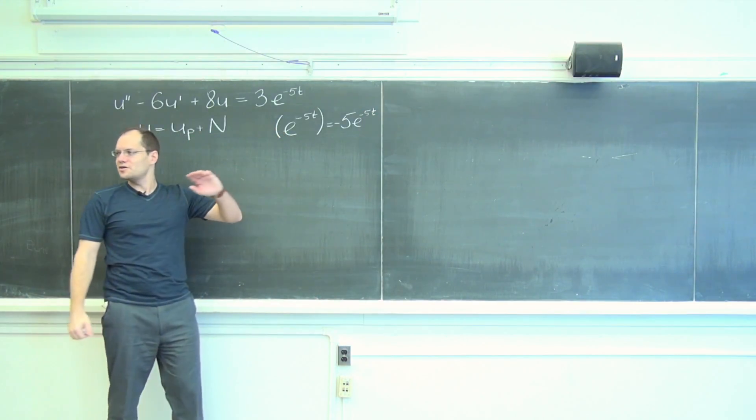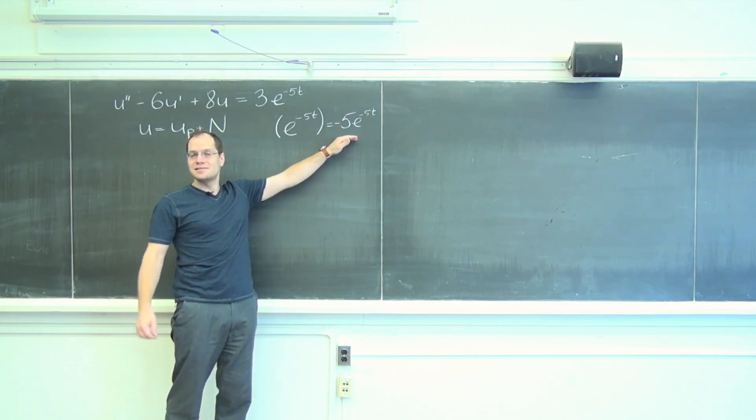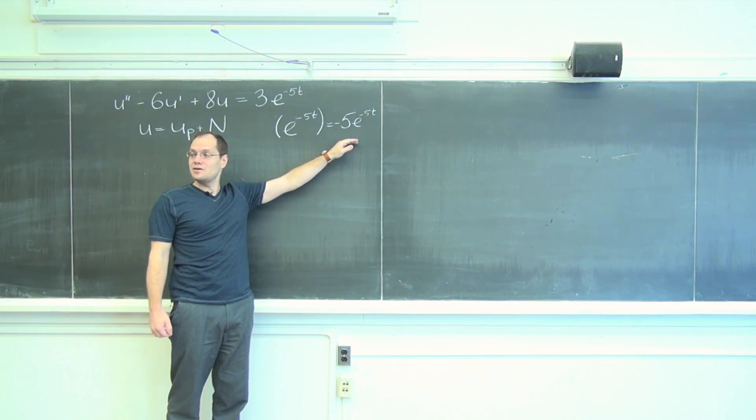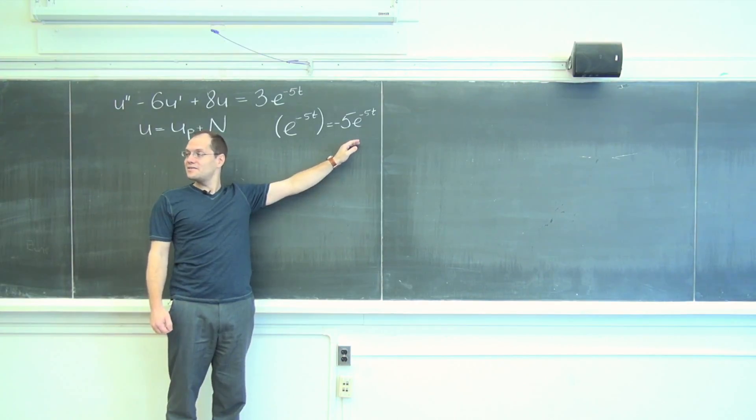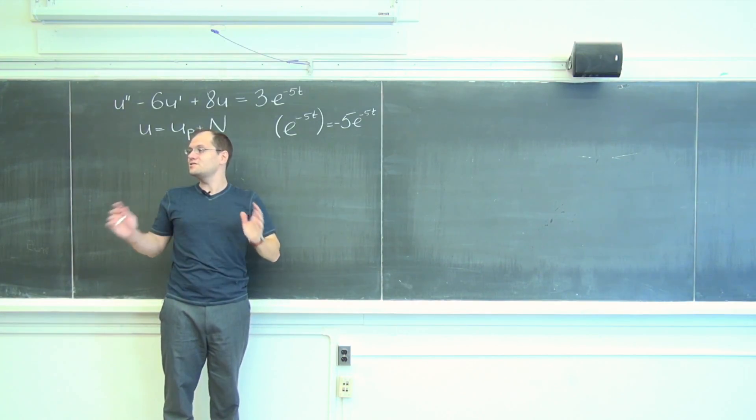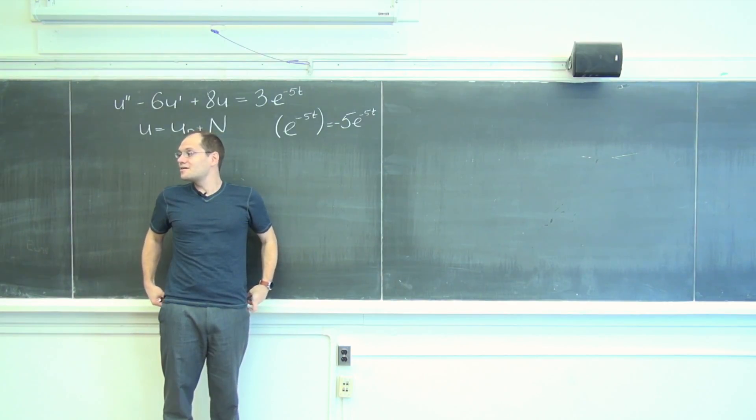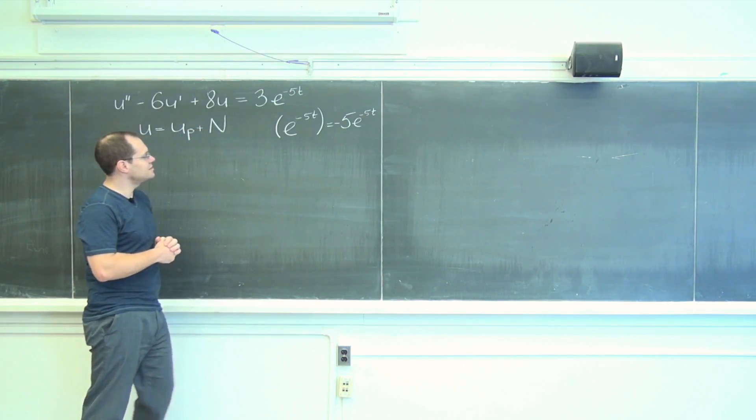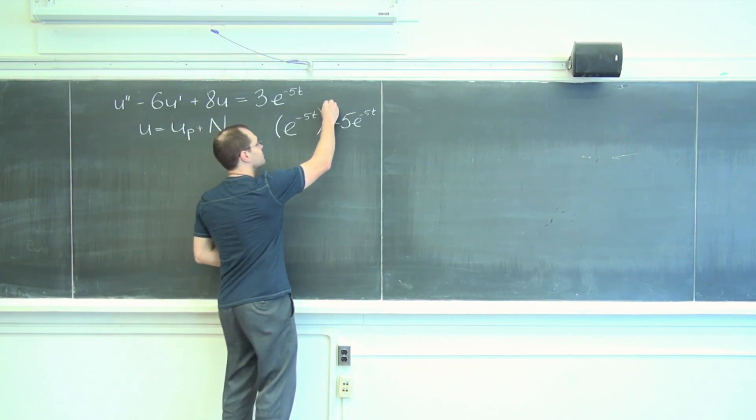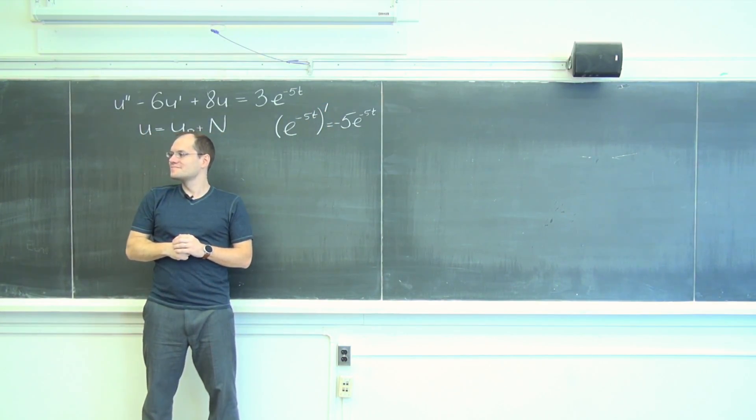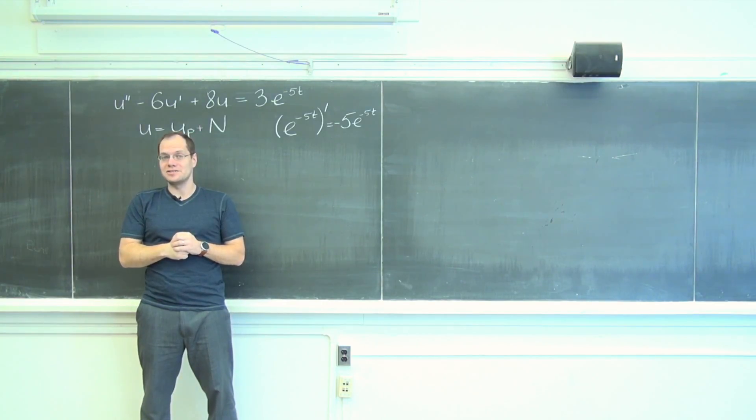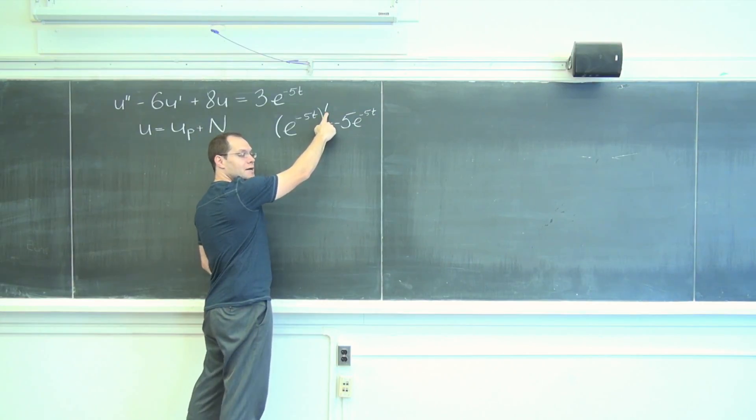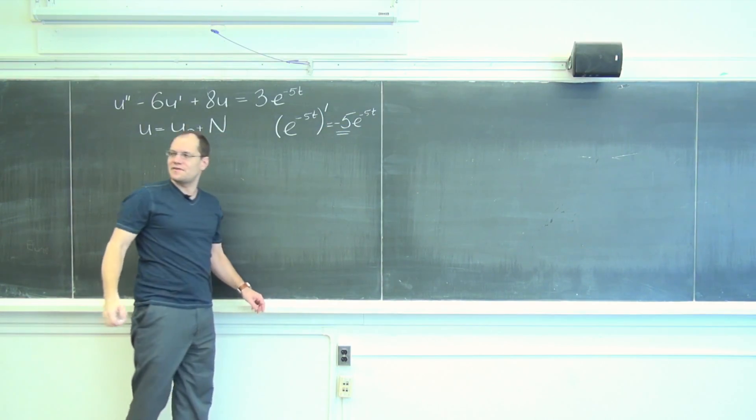So when you were in your calculus class you would look at this and say that's a simple formula. Now you look at it and you should think to yourself: that's an eigenvalue equation. So linear algebra completely changes what you think when you look at an equation. You should look at this and say, oh, I'm seeing an eigenvalue equation. e to the minus five T is an eigenfunction of the derivative operator, the eigenvalue being minus five.